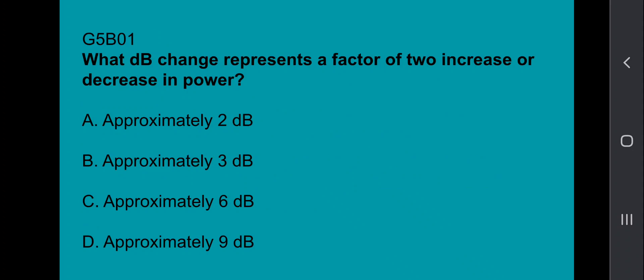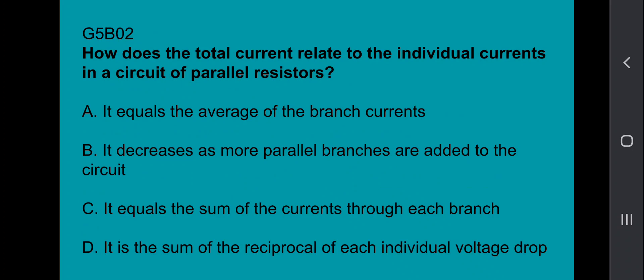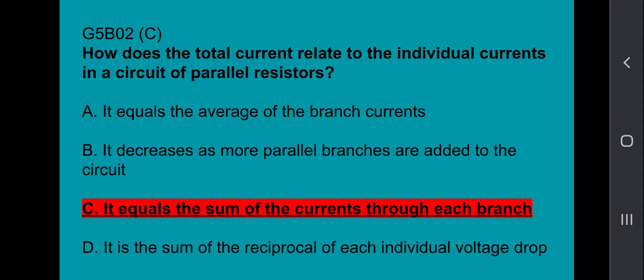G5B01, what dB change represents a factor of 2 increase or decrease in power? That's going to be approximately 3 dB. G5B02, how does the total current relate to the individual currents in a circuit of parallel resistors? It equals the sum of the currents through each branch.